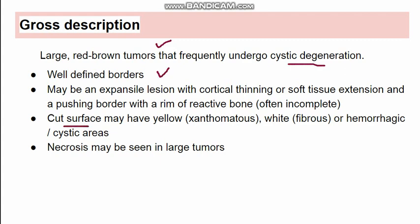The cut surface can show various changes: hemorrhage, cystic changes, yellowish xanthomatous changes, white fibrous changes, and necrosis in large tumors. The lesion can erode into bone, leading to cortex thinning and invasion into soft tissue. Importantly, it has a pushing border — characteristic of a benign tumor, not an infiltrating border. A rim of reactive bone can also be seen.